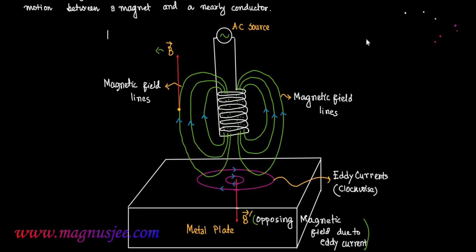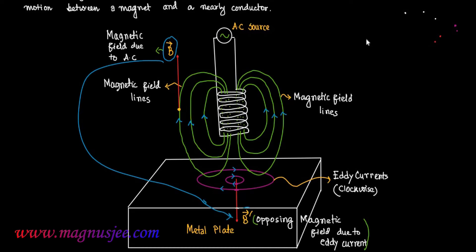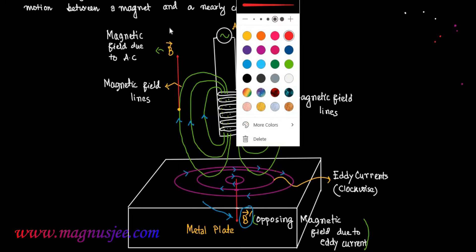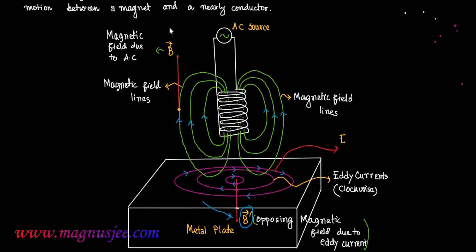Vector B prime is the magnetic field induction produced due to eddy currents flowing clockwise in the horizontal metal plate. Vector B is the magnetic field induction produced due to alternating current flowing through the coil, and this vector B is opposed by vector B prime. These are the loops of electric current also known as eddy currents.